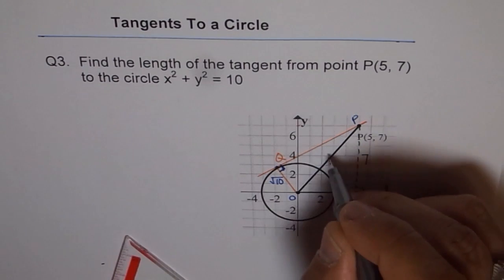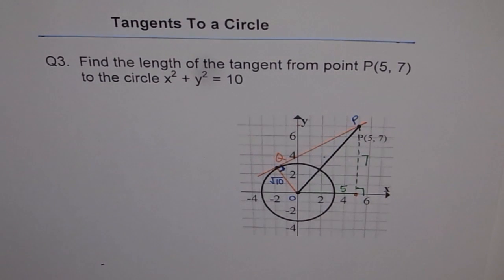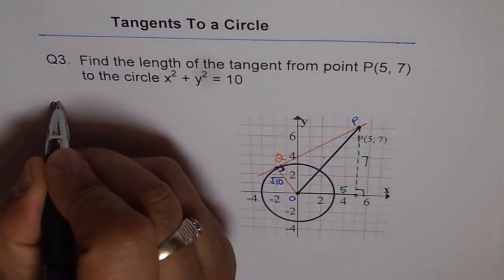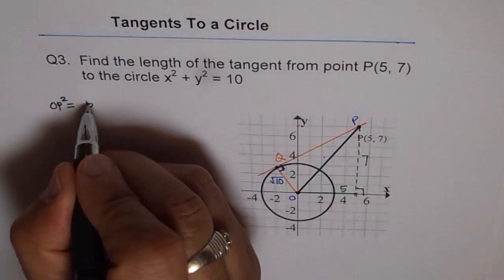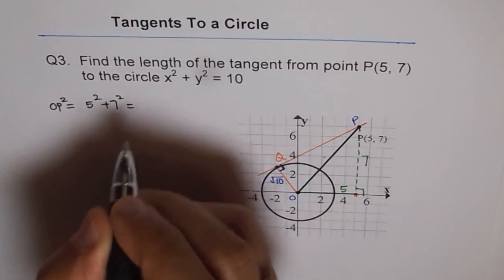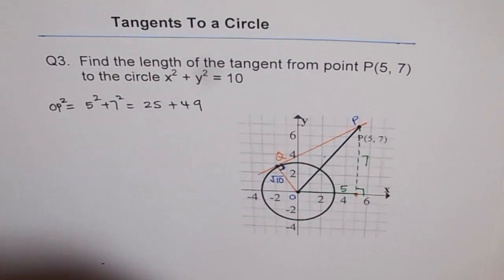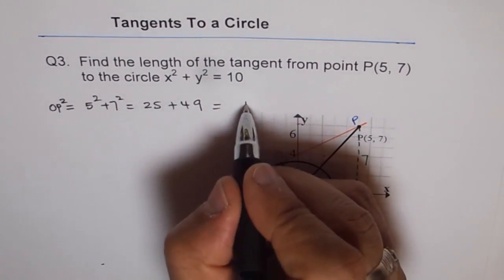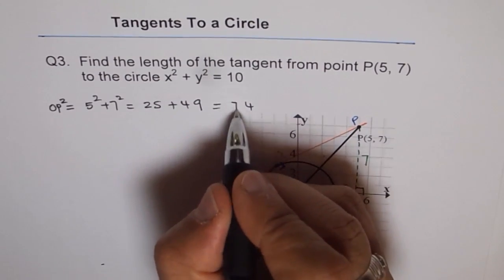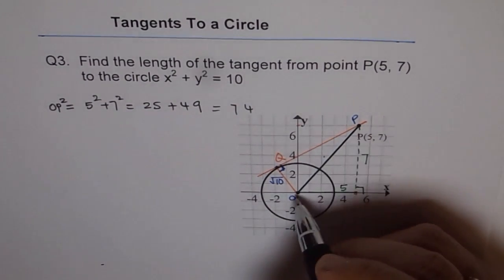And this is the right triangle. Then OP should equal Pythagorean theorem. So we'll use that. So we'll write OP squared equals 5 squared plus 7 squared. 5 squared is 25, 7 squared is 49. So that gives us 74. So OP squared is 74 for us.